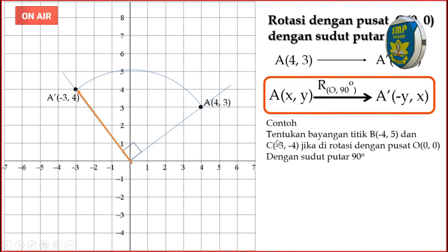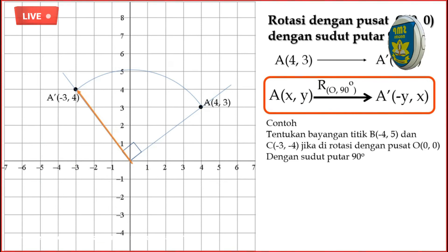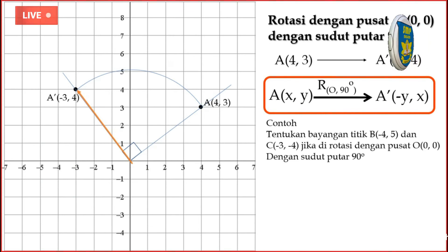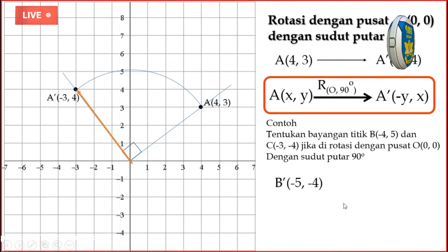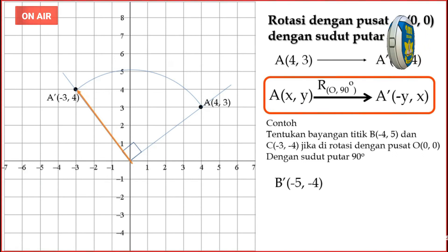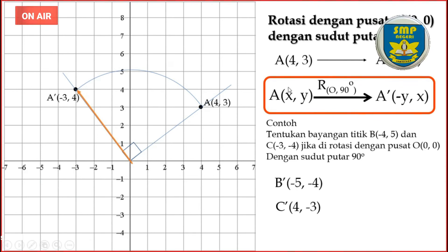Tentukan bayangan titik B dan titik C, dirotasi dengan pusat O(0,0) dengan sudut putar 90 derajat. Rumus: (-Y,X). Titik B(-4,-5): Y-nya -5, maka bayangan B aksen adalah (-(-5),-4) = (5,-4). Titik C(-4,5): Y,X menjadi (-5, -4). Banyak yang sudah menjawab benar. Rumus: (X,Y) diputar 90 derajat dengan pusat O(0,0) menjadi (-Y,X). Harus dihafal.